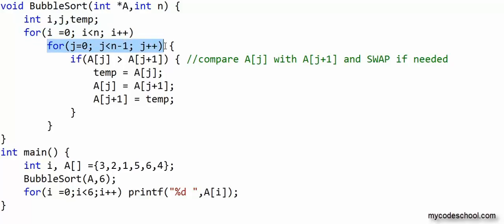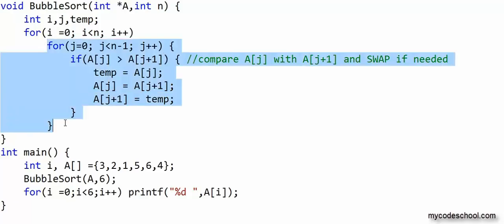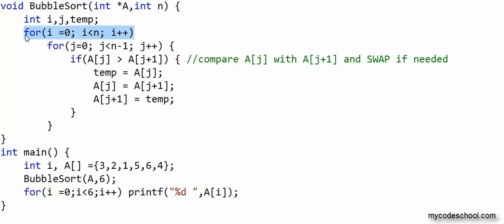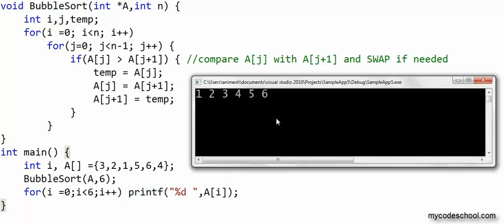In bubble sort, we make multiple passes on an array. In each pass, as we go from left to right through lower to higher indices, we compare adjacent elements, and if the element at the lower index is greater than the element at the higher index, we swap the elements. This inner loop is one pass on the array, and the outer loop makes n passes. After the first pass, the largest element bubbles up to the highest index. Finally, after n passes, the complete list will be sorted. The output is as expected — we have a sorted list.